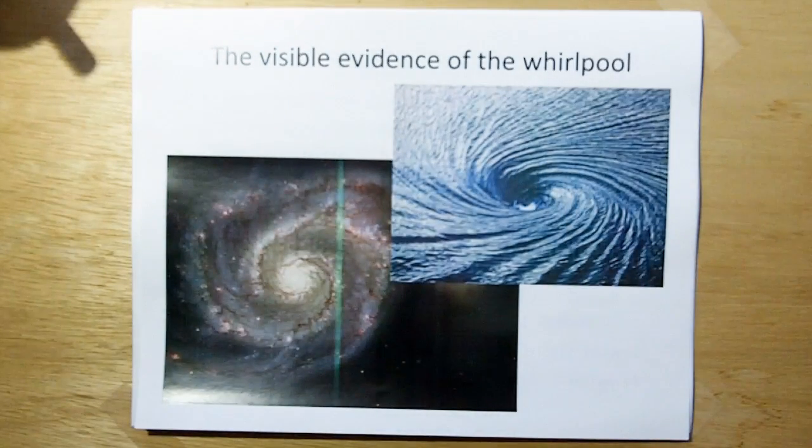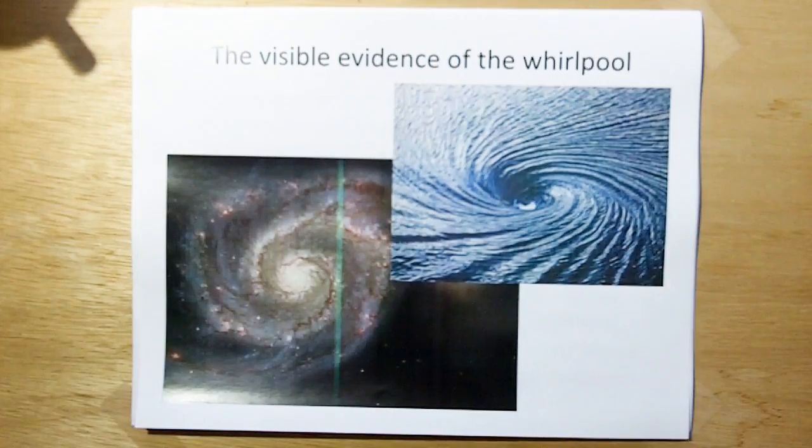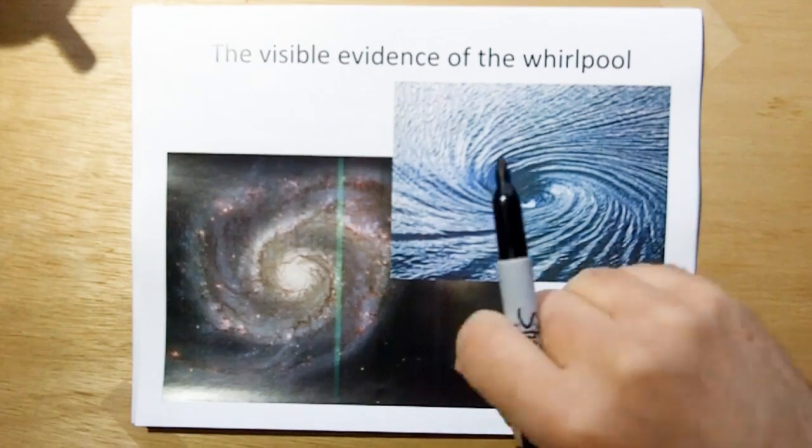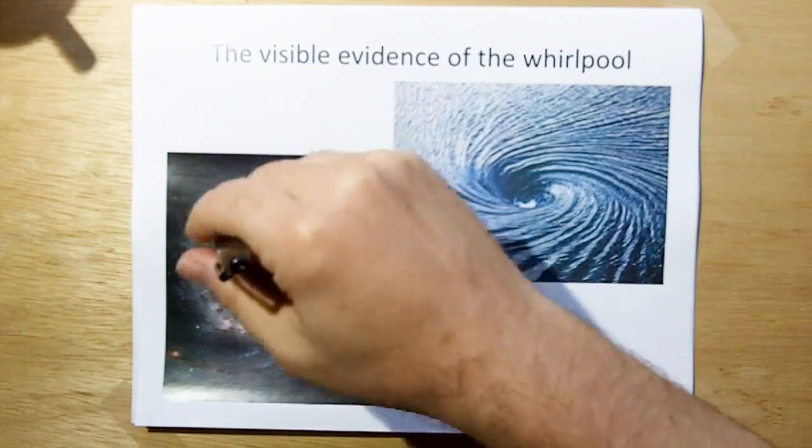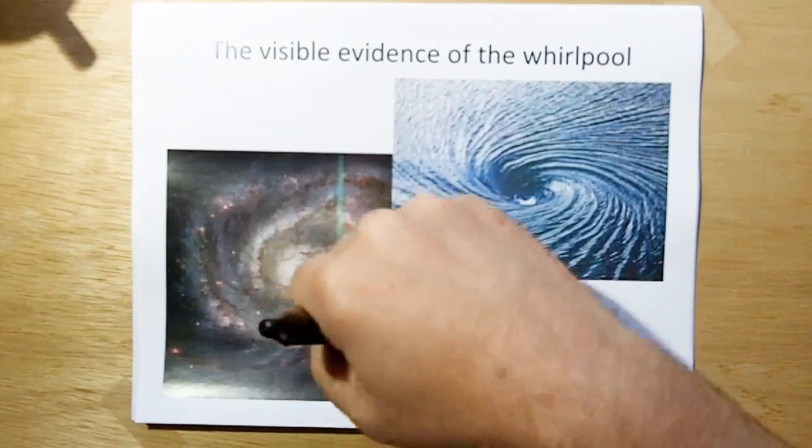And there's visible evidence of the Whirlpool. Whirlpool galaxies. The stars are virtually not moving as far as the ether. They're moving with the ether.